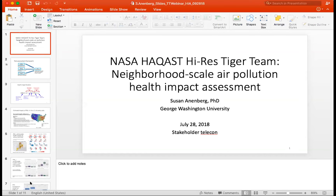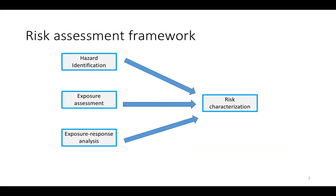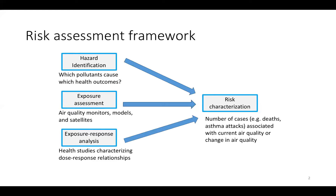My name is Susan Annenberg. I'm an associate professor at the School of Public Health at George Washington University. I'll be talking about applying fine-scale PM2.5 concentration estimates to do health impact assessment in four U.S. cities. The risk assessment framework has several steps: hazard identification — which pollutants cause which health outcomes — and there's already substantial literature linking PM2.5 with a range of health outcomes. Exposure assessment is how we use monitors, models, and satellites to estimate exposure at different geographic and spatial scales.